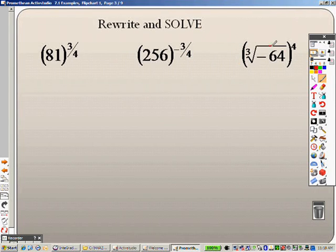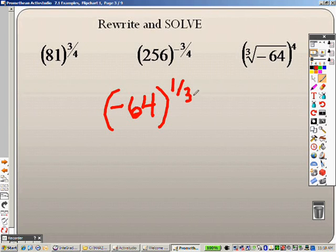And then the last one here, rewrite and solve. When I'm sitting here looking at this, if I wanted to, just so you can see what you can do with roots, so you can see an example. I have negative 64. Instead of writing it to the 3rd root, I could rewrite this to the 1/3rd. And then take that to the 4th power, right?